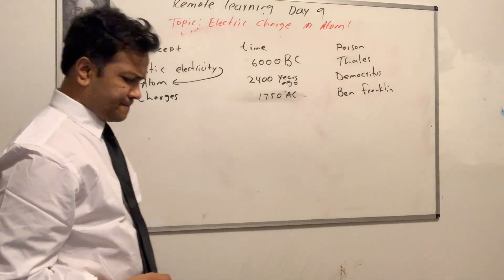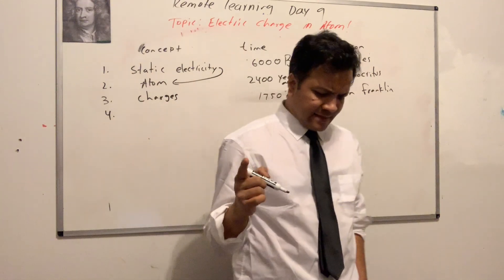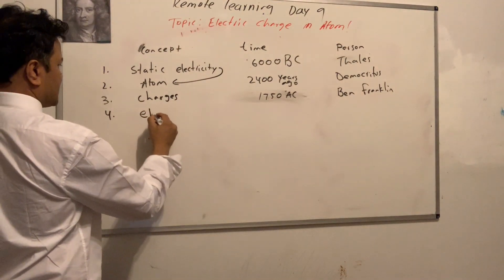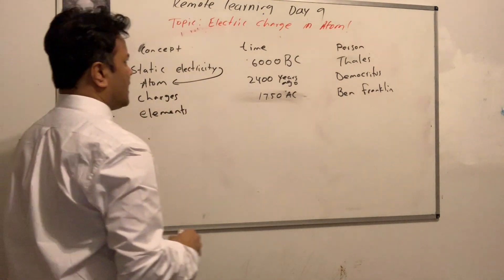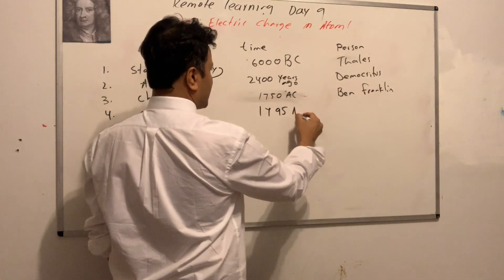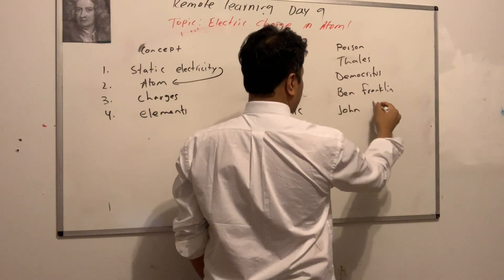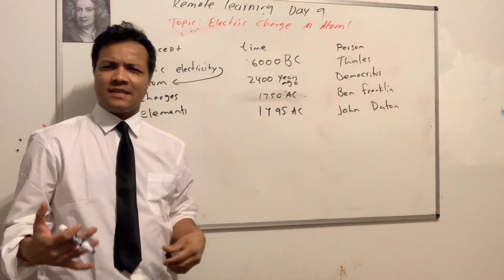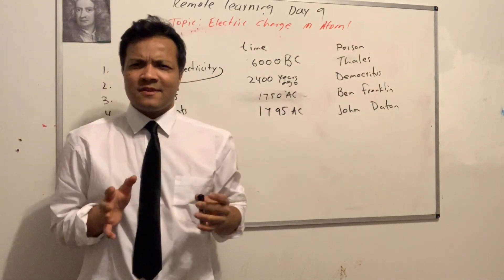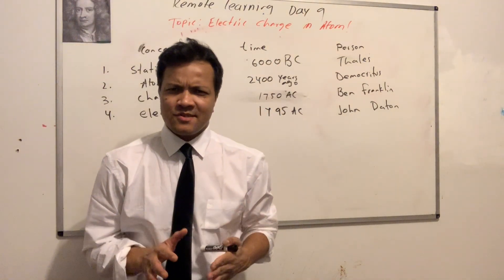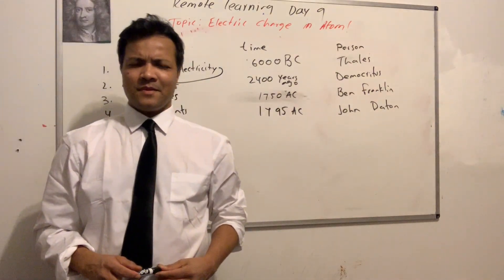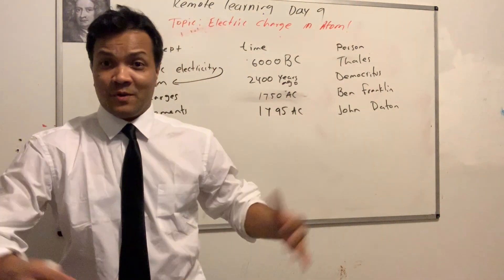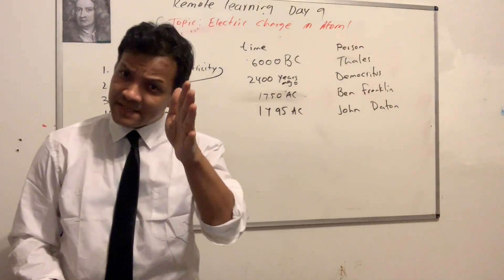The next big thing was Dalton. John Dalton gave us the concept of element, around 1795. What Democritus did was give the idea of atom, and Dalton gave us the idea of element. Democritus thought there was only one type of atom, but Dalton realized there are more than one type. Now we know there are 118 different types of atoms. Elements is nothing but the list of atoms.